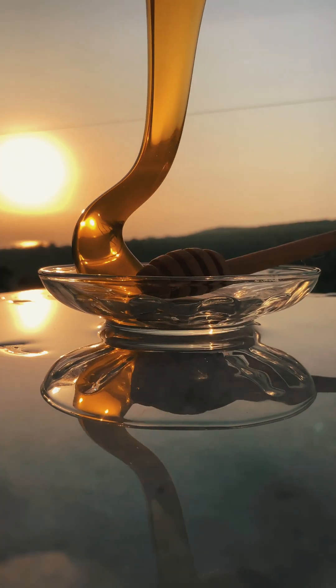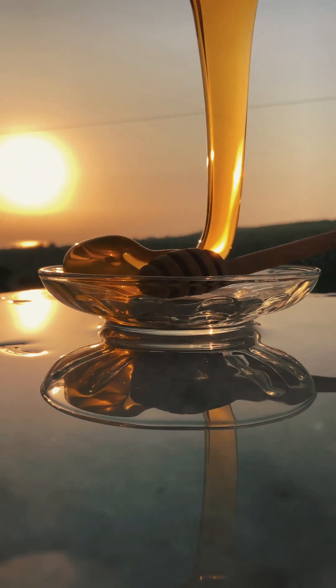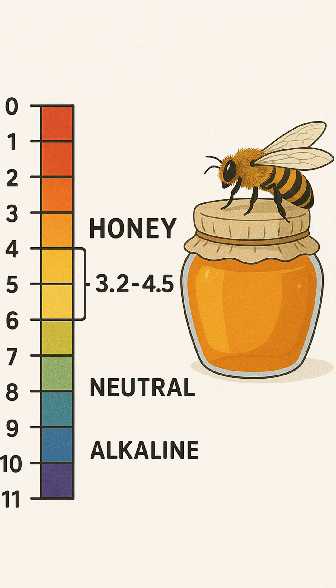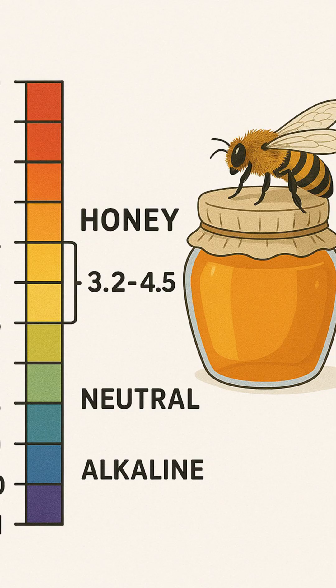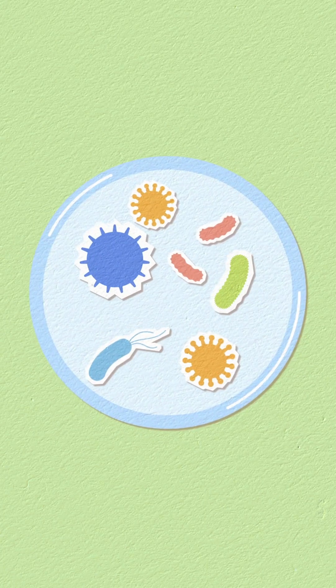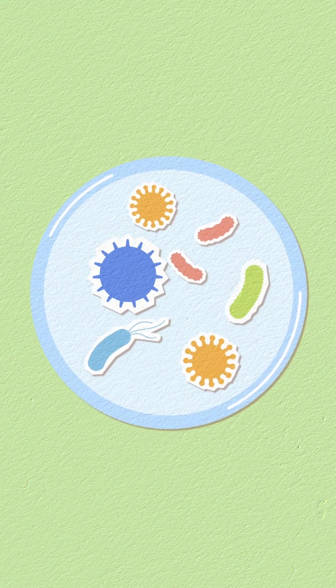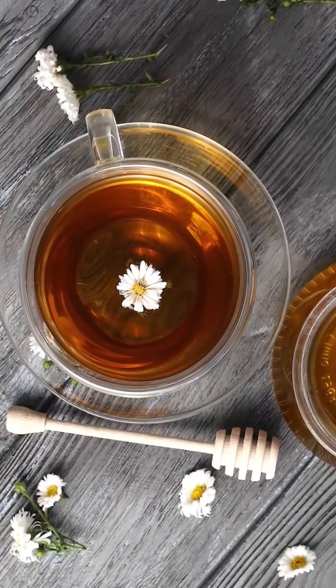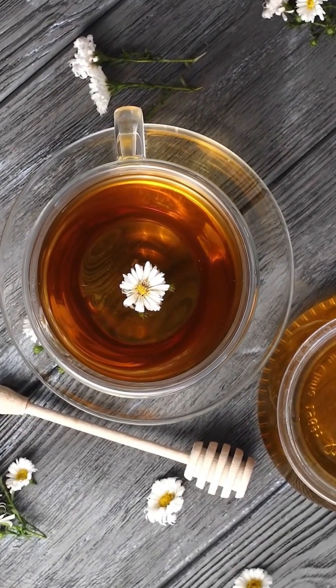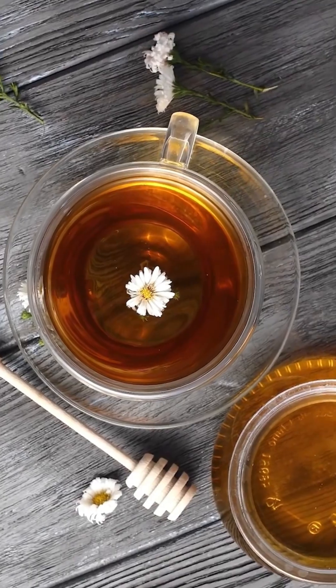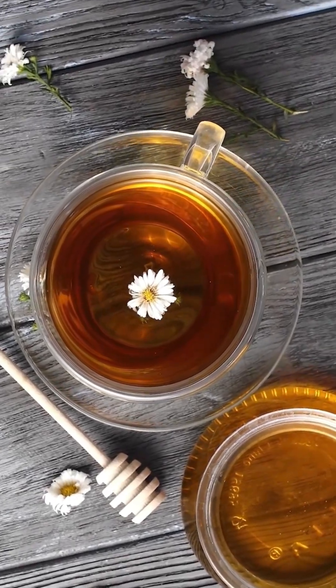Honey is also incredibly acidic, with a pH between 3.2 and 4.5. Most bacteria prefer a neutral or slightly alkaline environment, so honey's acidity creates a hostile environment for spoilage organisms.